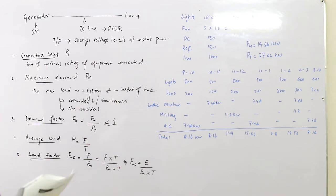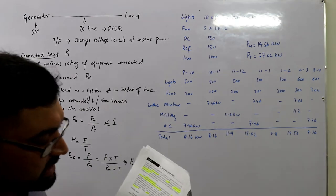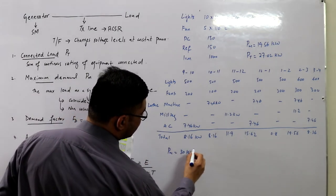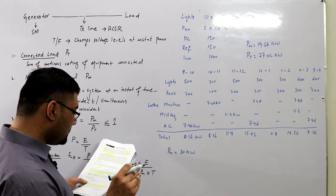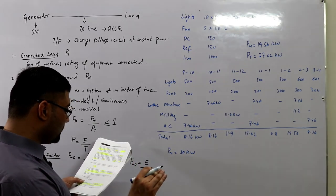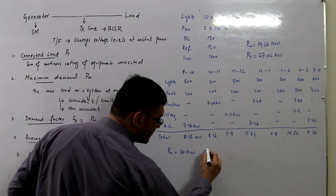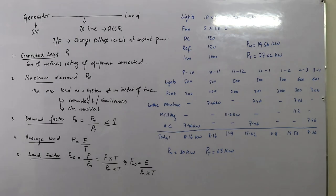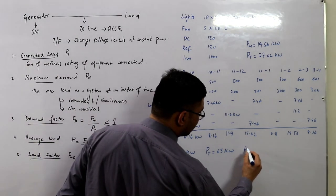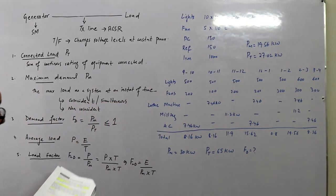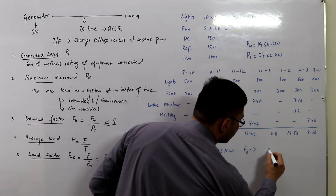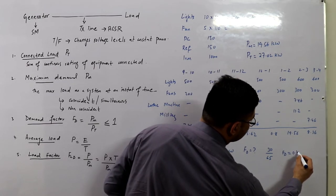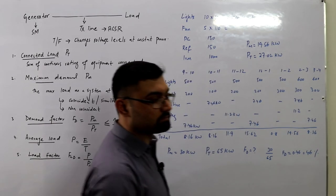Example: A consumer has a maximum demand PM of 30 kilowatts and equipment with an installed capacity of 65 kilowatts. Calculate the demand factor. FD = PM / PT = 30 / 65. The demand factor comes out to be 0.46, or 46 percent.